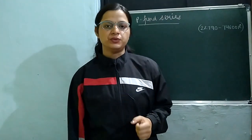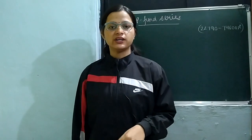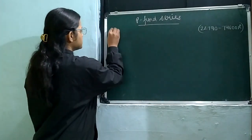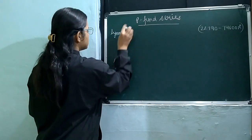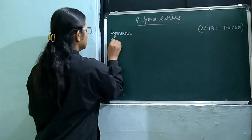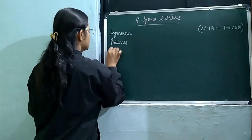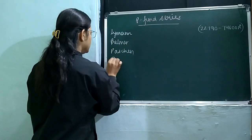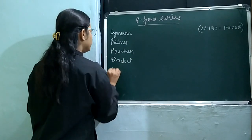The Pfund series belongs to the 5th number. When we talk about hydrogen spectra, the normal series starts with Lyman. The first series is Lyman, then we have Lyman, Balmer, Paschen, Brackett, and Pfund.